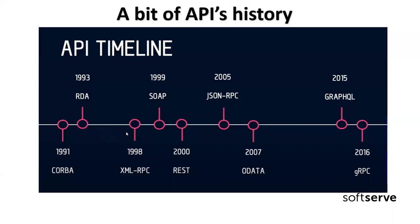A bit later we got RDA — Remote Data Access — which you can think of as querying data from a database over a network interface. Later, in 1998, we got a formal specification for RPC released by Microsoft, based on XML.